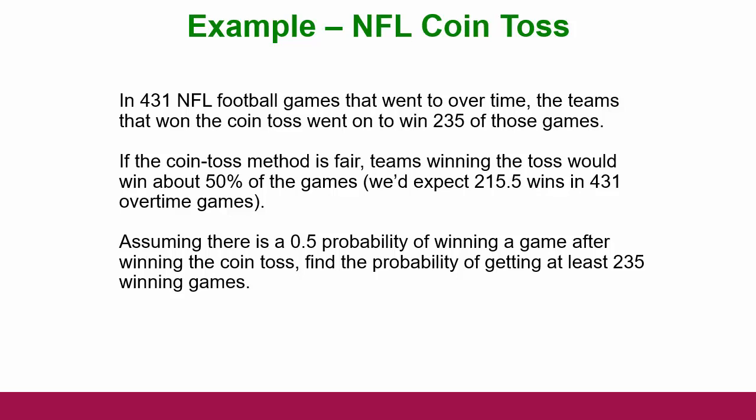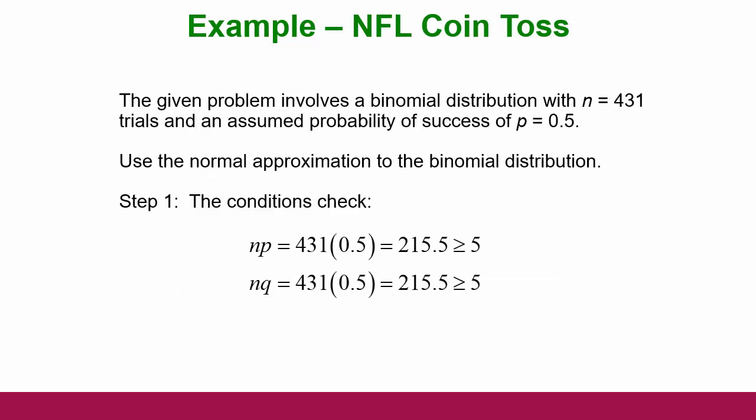Basically, we're asking: if the assumption of a fair coin is true, and we assume that over the long run the probability of winning because you went first should be 50/50 — you might think that's not fair because one team is better, but in the long run the good team is going to go first just as much as the weaker team, so it really should be a 50/50 chance. If those assumptions hold, what's the likelihood of getting 235 or more wins out of 431? That will tell us if our assumptions are wrong — and if so, winning the coin toss actually skews the chances of winning. We do our checks: 431 times 0.5 and 431 times 0.5 are both greater than or equal to 5, so we can move on.